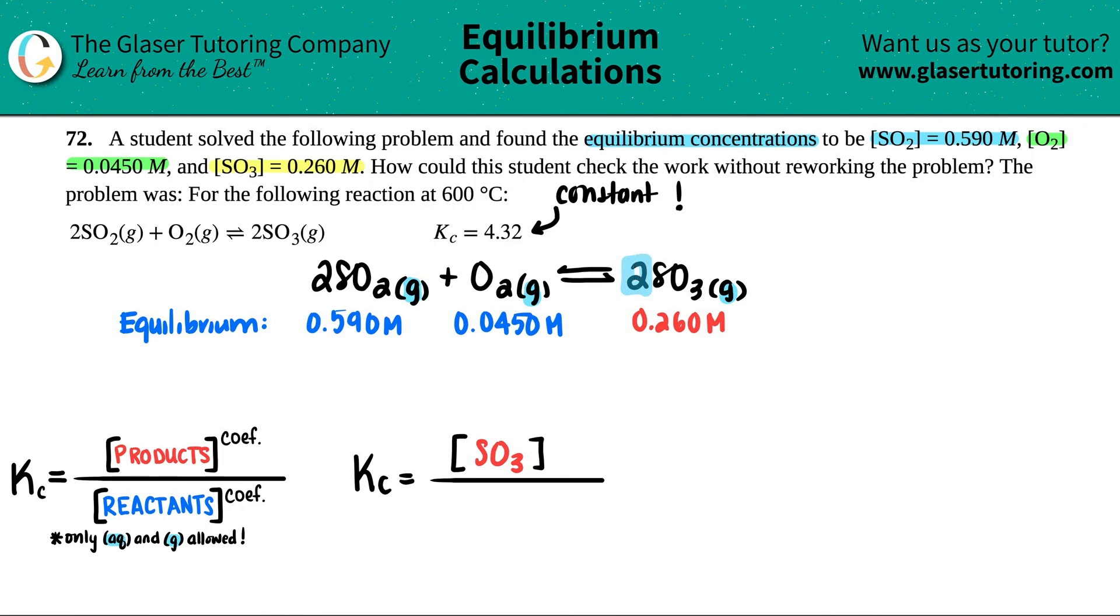So Kc equals something over something else, products divided by reactants. So I have bracket, I have the SO3, and now that's raised to the coefficient. Remember that's the big numbers in the front, so I see that I have a two in front of the SO3, so I have to raise it to the second. And then we come over here, I have the SO2, and I check for a coefficient. I do see one, it is a two, so I know that I have to raise that to the second.